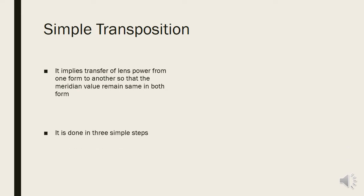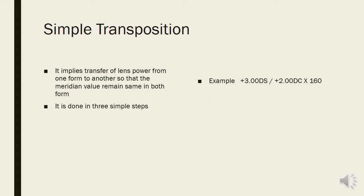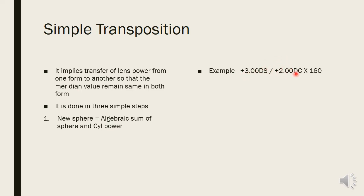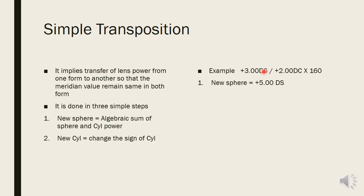Simple transposition is done in three steps. Step one: the new sphere is the algebraic sum of sphere and cylinder. For example, with plus three spherical and plus two cylinder, the new sphere = plus three plus two = plus five. Step two: the new cylinder has the opposite sign — plus two cylinder becomes minus two cylinder.